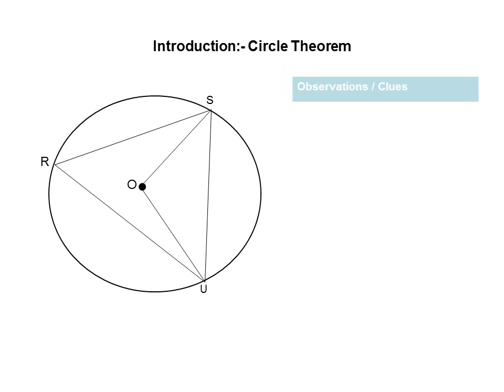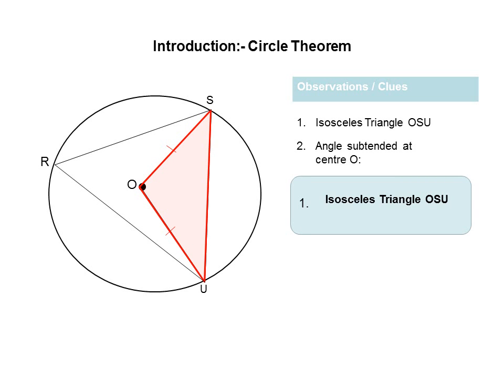Let's look at the second diagram. Once again, let's observe the diagram carefully and look for clues. What's the first thing that we note? That triangle OSU is an isosceles triangle. Clue number two is telling me that I have an angle subtended from chord SU at the center, and I have an angle at R which subtends from that same chord. Therefore, I'm going to look for an opportunity to apply the angle at the center theorem. Notice my isosceles triangle — why is it isosceles? Because OS and OU represent the radius of that circle, meaning they are equal and therefore I have two equal sides, making it an isosceles triangle.